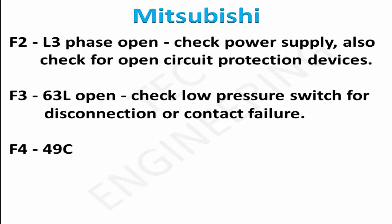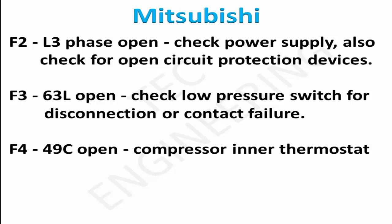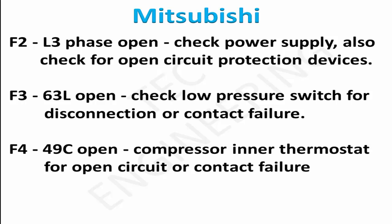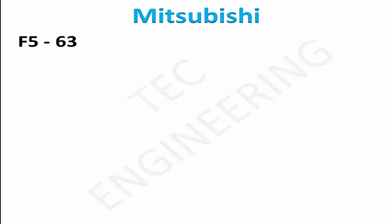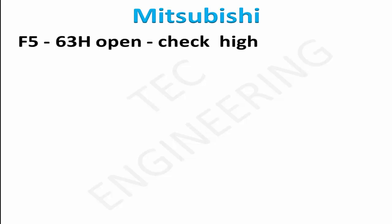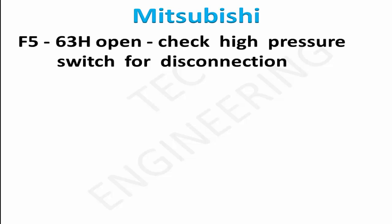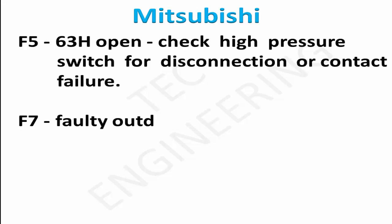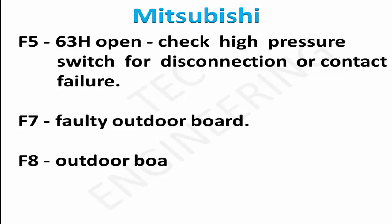F4: 49C open — check compressor inner thermostat for open circuit or contact failure. F5: 63H open — check high pressure switch for disconnection or contact failure. F7: faulty outdoor board. F8: outdoor board defective.